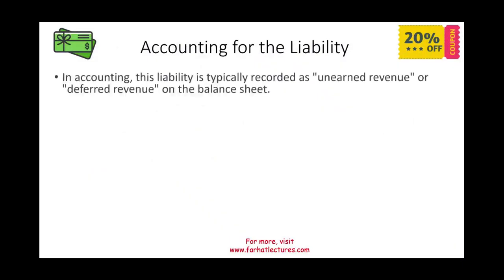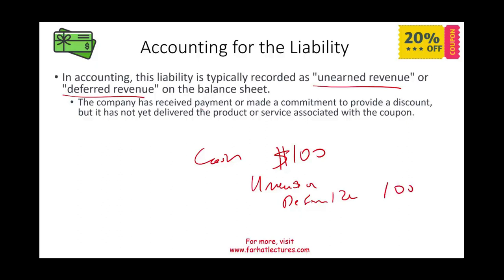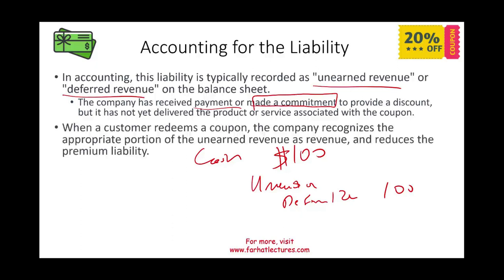In accounting for this liability, we typically record unearned revenue or deferred revenue on the balance sheet initially. For example, if someone goes into Starbucks and purchases a gift card for $100, Starbucks will debit cash $100 and credit unearned revenue $100. The company has received a payment but has not delivered the product or services yet. When the customer redeems the coupon or gift card, the company recognizes the appropriate portion of unearned revenue as revenue, which reduces the premium liability.